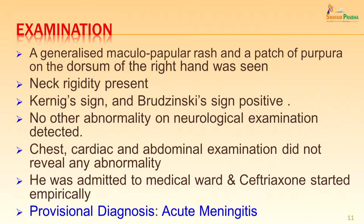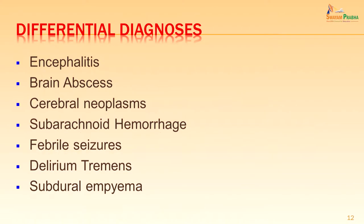No other abnormality on neurological examination was detected. Chest, cardiac and abdominal examination did not reveal any abnormality. He was admitted to the medical ward and ceftriaxone started empirically. Provisional diagnosis based on clinical findings was acute meningitis. The differential diagnoses kept in mind were encephalitis, brain abscess, cerebral neoplasms, subarachnoid hemorrhage, febrile seizures, delirium tremens and subdural empyema.